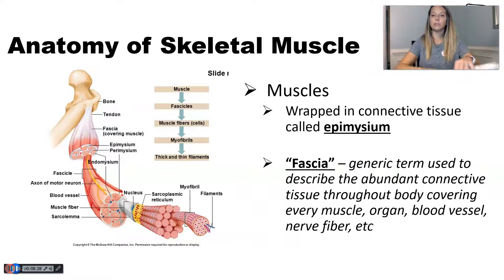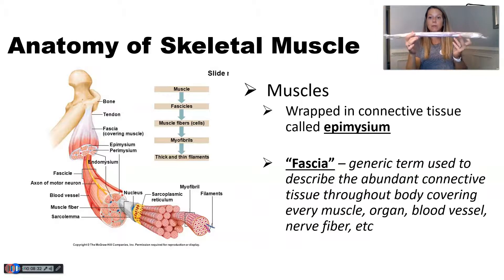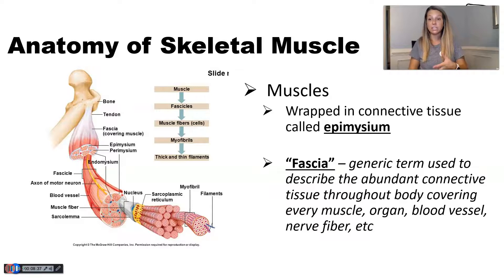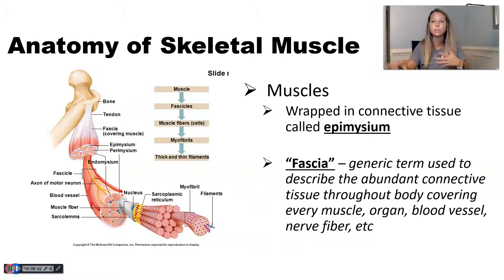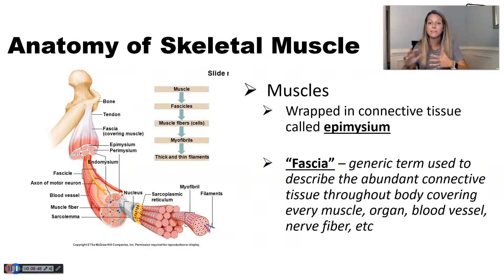This whole outer layer of connective tissue on my muscle organ is called epimysium. Sometimes you'll hear the term 'fascia' — fascia is just a term used to describe the abundant connective tissue that's all around and in between your muscles, skin, bones, blood vessels, and nerve fibers. It's just all the stuff you have to get through to get to the individual parts of your body.